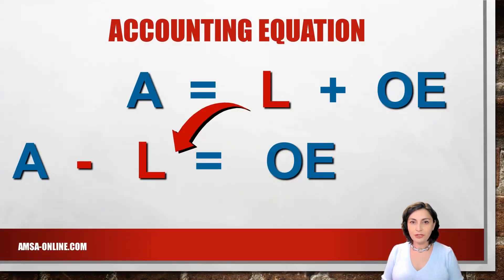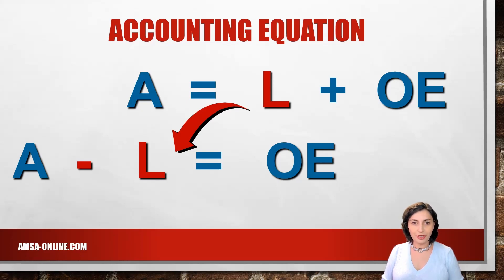The accounting equation represents the relationship between a business's assets, liabilities, and owner's equity. Assets equals liabilities plus owner's equity. If we rearrange it, owner's equity equals assets minus liabilities.